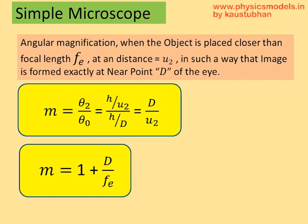Now, it can also be derived that this magnification is equal to 1 plus d by fe. So, we have an additional 1 here. So, therefore, we are getting a higher magnification than when the object was placed at the focal length.